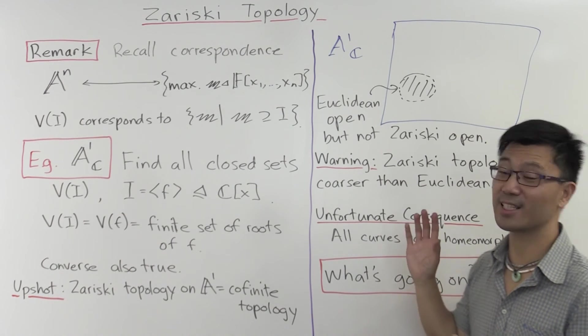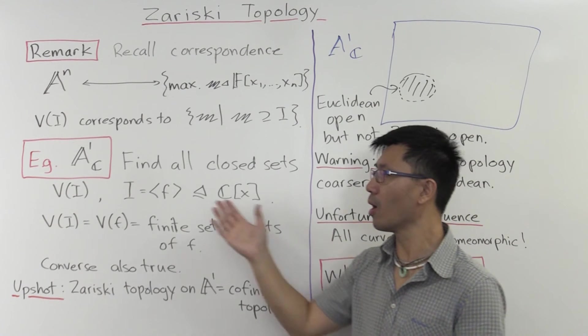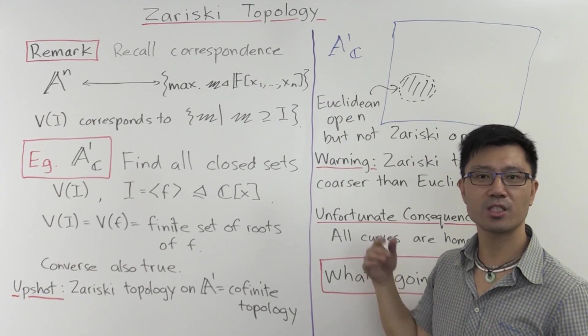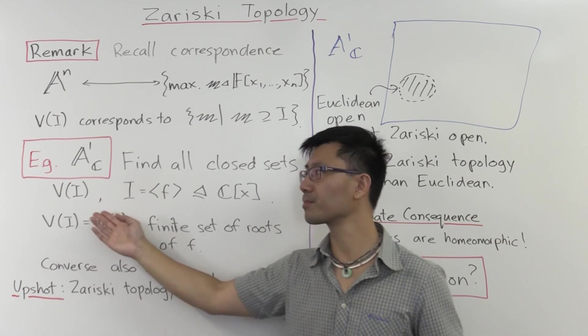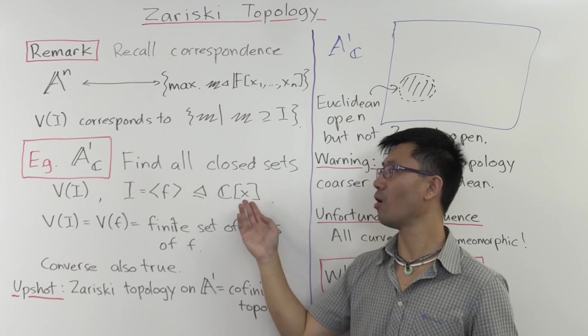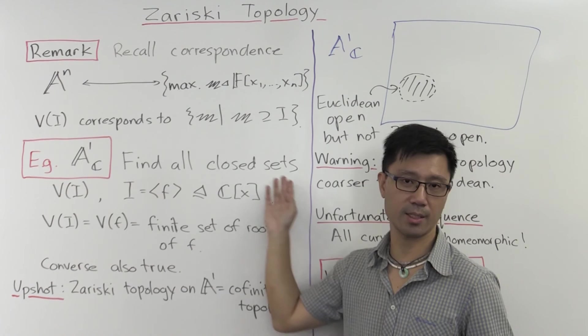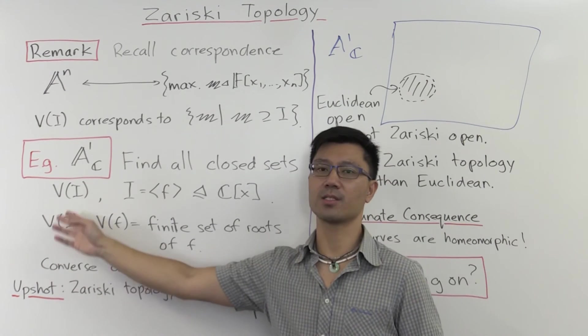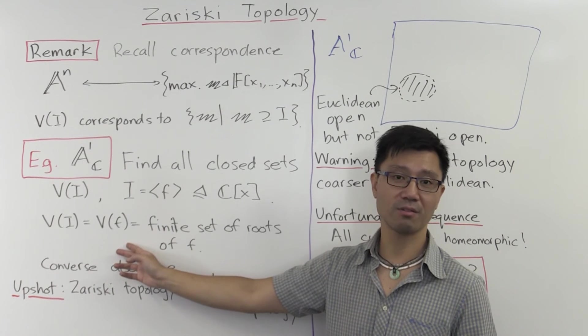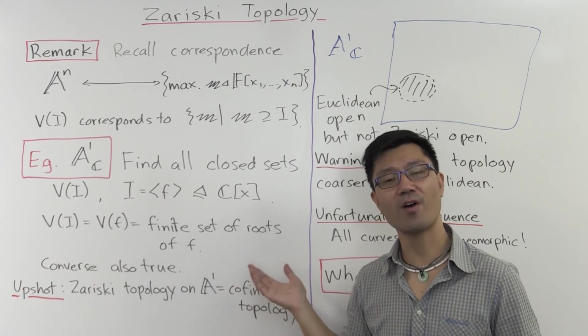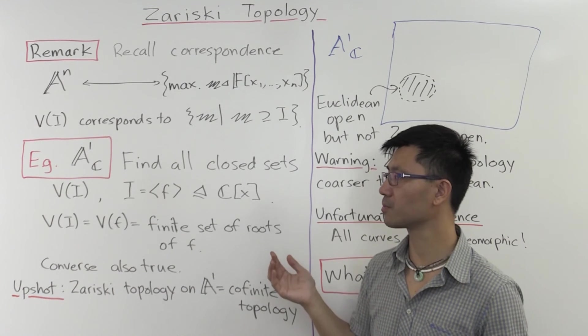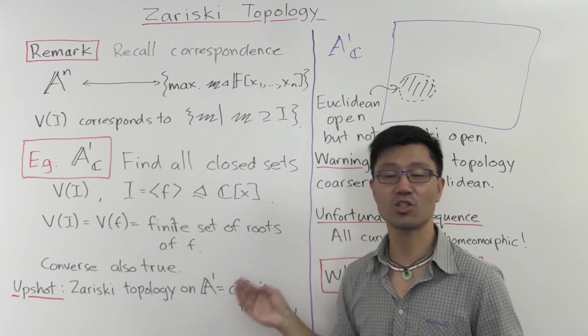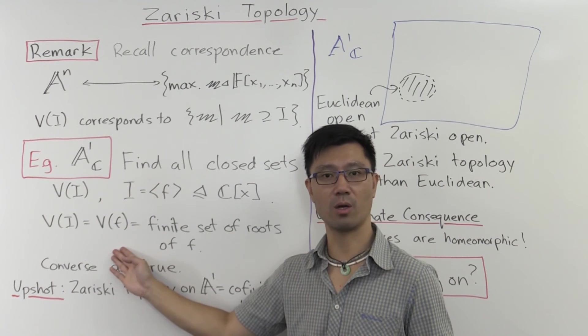Okay, so let's have a little look at an example of the Zariski topology. And the simplest situation we can look at is the affine line. And let's look over the complex numbers. To work out its topology, we just work out all the closed sets V of I. So what does an ideal I of the polynomial ring C[x] look like? Well, this is a principal ideal domain. So it's just generated by one polynomial f. So the variety of this I is just the variety of the zeros of f. And this is just a single polynomial. So it's just some finite set of roots. So conversely, any finite subset of C is actually closed.